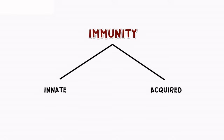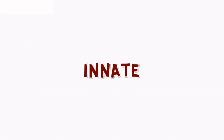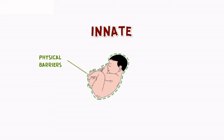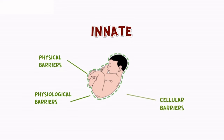Immunity can be of two types: innate and acquired immunity. Innate or natural immunity is the body's general defense that is present at the time of birth. It comprises inborn immune mechanisms that do not depend upon previous exposure to an antigen. It consists of four types of barriers: physical barriers, physiological barriers, cellular barriers, and cytokine barriers.